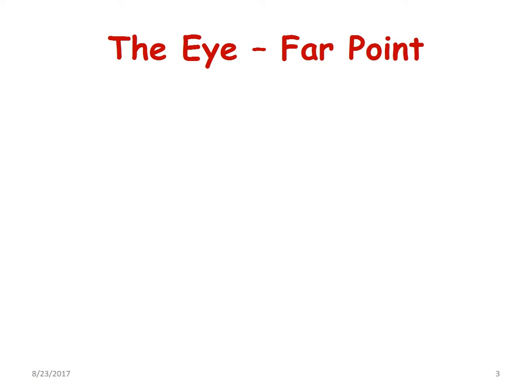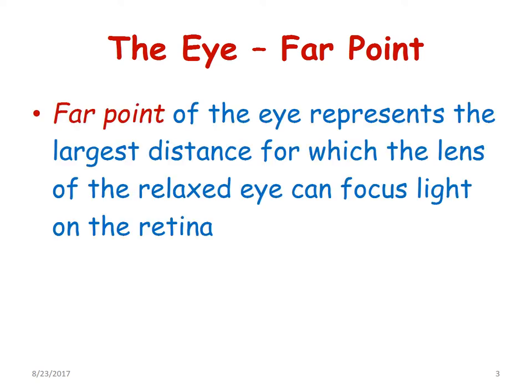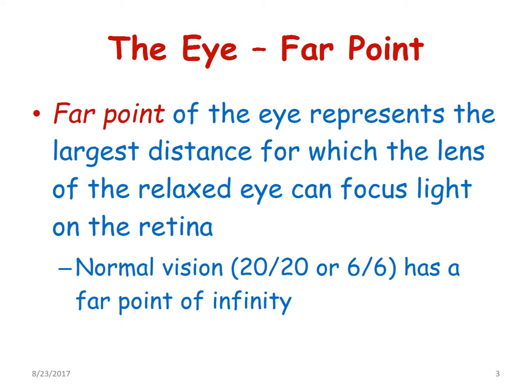Before understanding the accommodation reflex in the eye, we need to know what is the far point of the eye. The far point of the eye represents the largest distance for which the lens of the relaxed eye can focus light on the retina. Normal vision is usually described as 20/20 or 6/6 and has a far point of infinity.